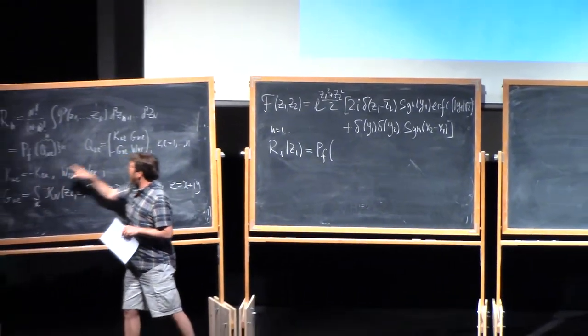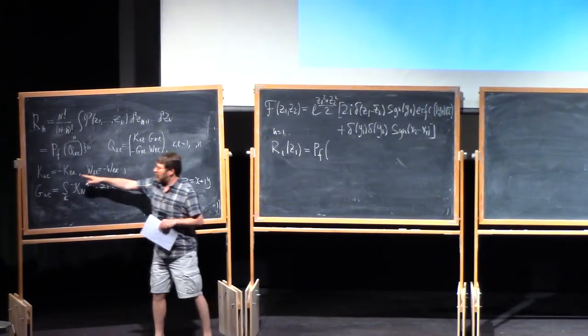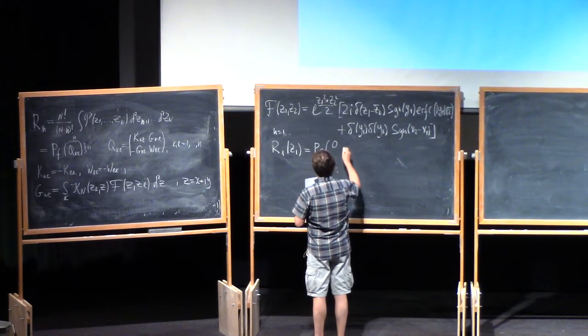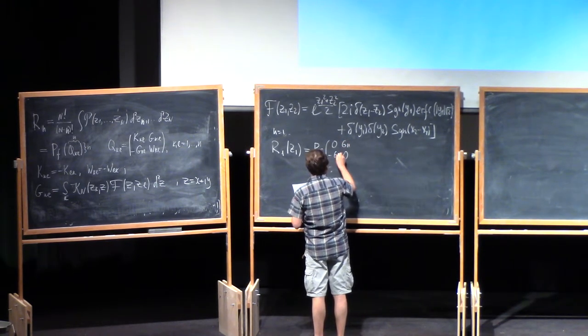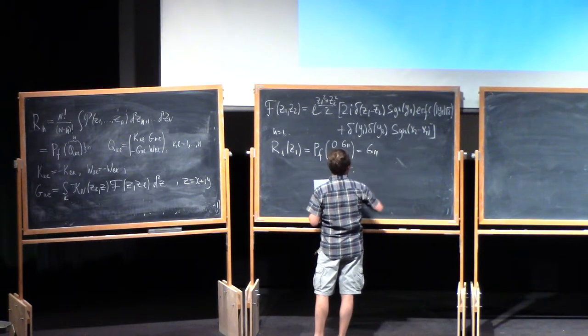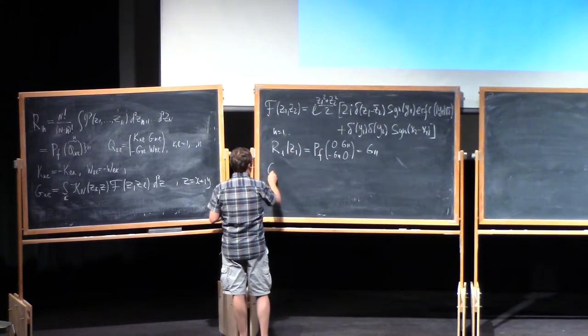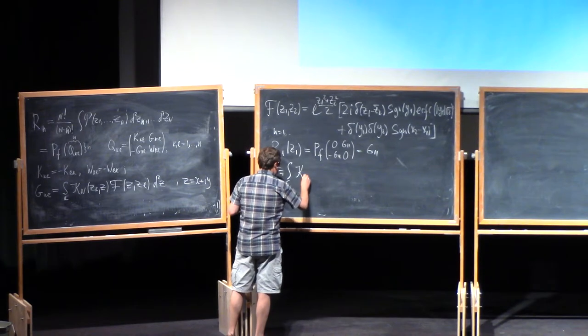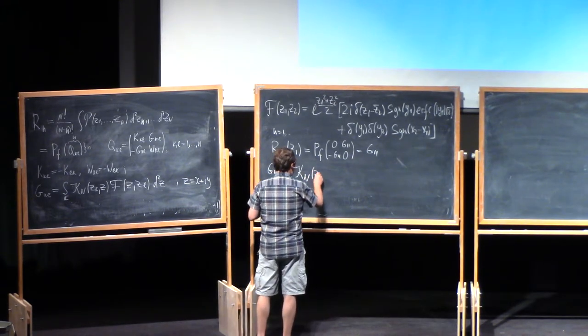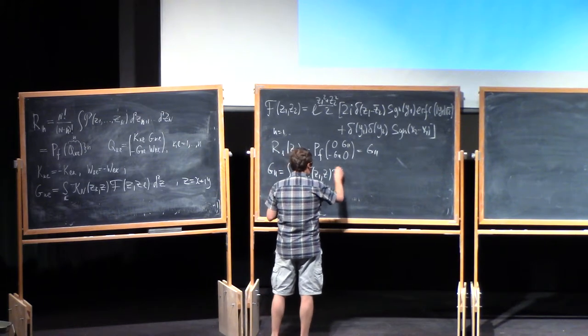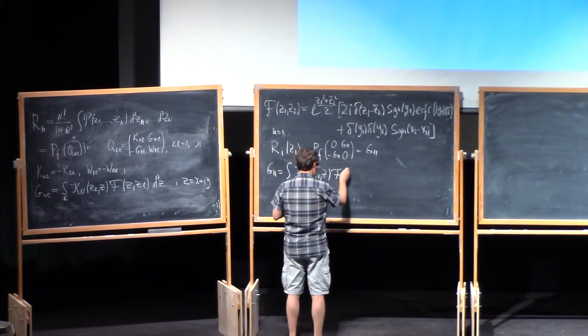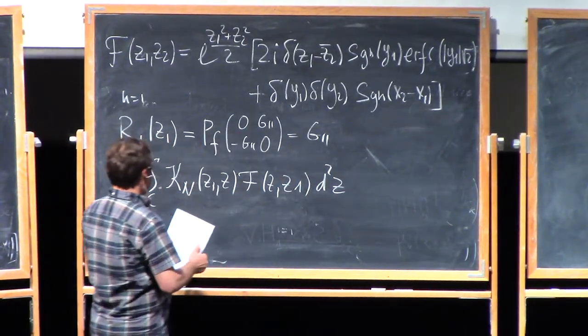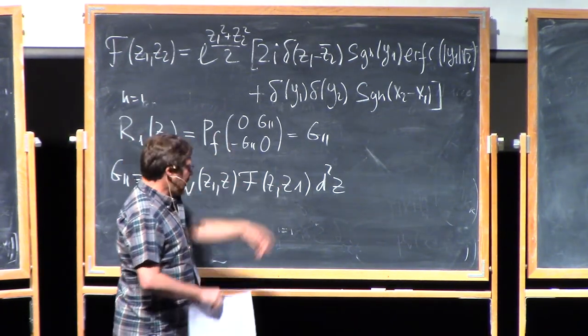I'm only interested in the mean density, which is just R1. So N equal 1. R1 is a function of Z1. Then this will be a Pfaffian of just a single block, one by one block. By antisymmetry, these two entries are 0. So we have just G11 minus G11. So the Pfaffian is just G11.